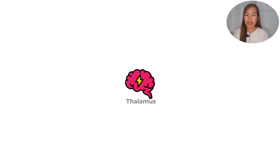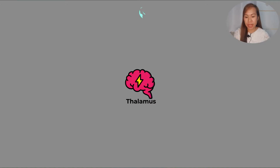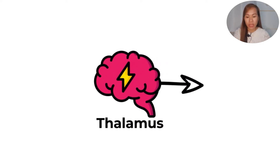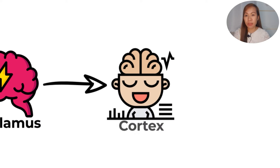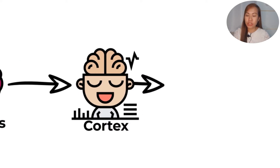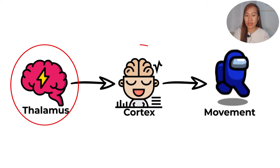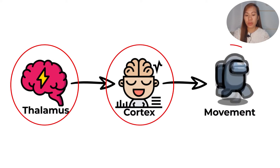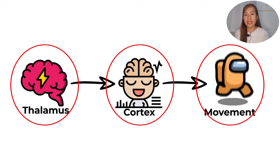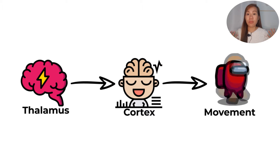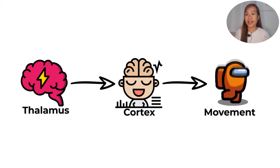As we can see in this picture, this is the thalamus. The thalamus is always excited — that's why it's represented by a lightning bolt. It is always excited and what it will do is stimulate the cortex, the motor cortex, to produce movement. Since the thalamus is always excited, it will always stimulate the cortex and we will always move.